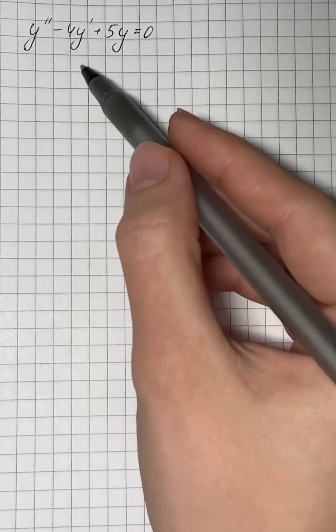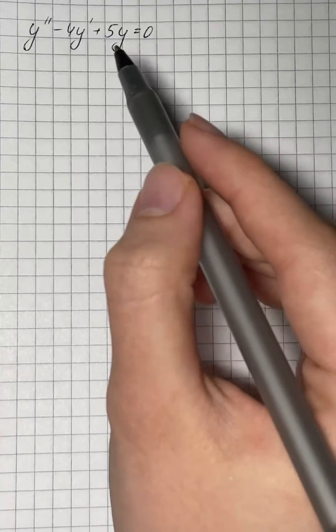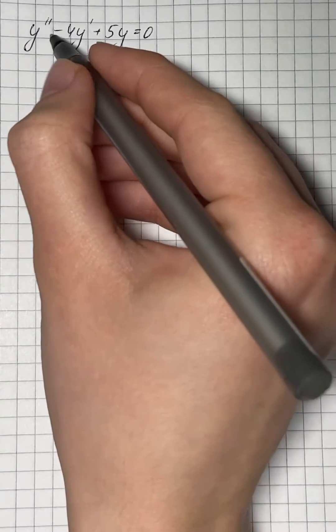The given equation is a linear second-order homogeneous differential equation, and we need to find its general solution. At first we can write an auxiliary equation,